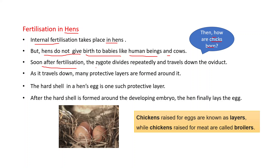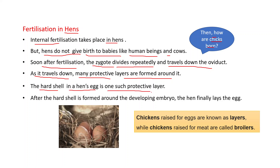The fertilization in hens is internal fertilization. Soon after fertilization, the zygote divides repeatedly and travels down the oviduct. As it travels down, many protective layers are formed around it, including the hard shell. The hen finally lays the egg containing the developing embryo.